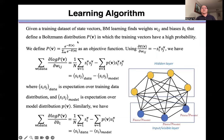Given the training set of state vectors, Boltzmann machine learning finds the wij and the biases bi that define a Boltzmann distribution in which training vectors have a high probability. We define p as the objective function using the relationship.